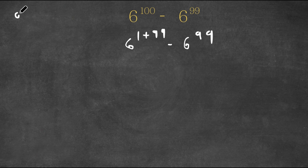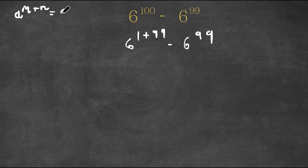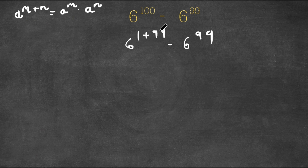And if I have something in the form A to the power of M plus N, then this is equal to A to the power of M times A to the power of N. So for 6 to the power of 1 plus 99, let's think of 6 as A, 1 as M, and 99 as N.